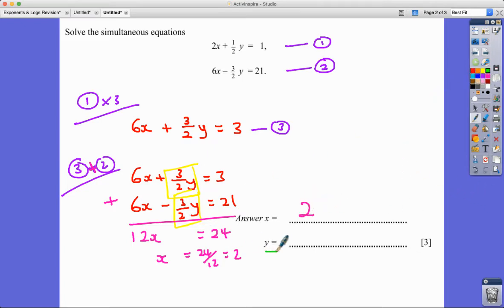And then if I need to find Y now, all I need to do is sub X equals 2 into the nicest looking one, probably number one, into equation 1. So 2 times 2 add a half of Y equals 1.